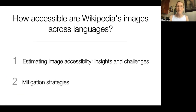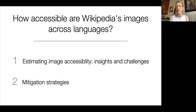In this work, we are asking how accessible are Wikipedia's images across languages. We highlight the challenges that come with estimating accessibility coverage and list potentially promising mitigation strategies that can help provide a more inclusive experience.